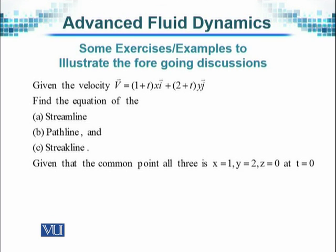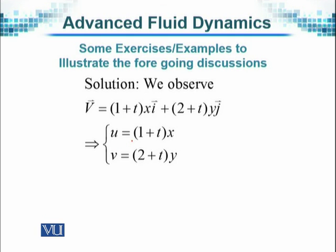You can see that there is no z component in the field. We can see the unit vectors i and j existing, but there is no unit vector k, which means that the motion is two dimensional, and there is no motion taking place for this flow field in the z direction. So given these quantities, we try to find out the equation, the question that has been given to us, we try to find out the equations of streamline, pathline, and then the streakline.